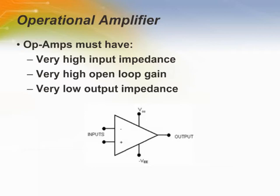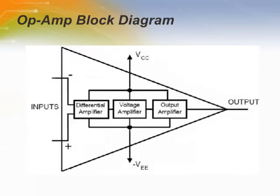Op-Amps must have very high input impedance, very high open-loop gain, and very low output impedance. It's next to impossible to achieve all three of these in one single stage. This is why Op-Amps generally have three different stages: the first stage is a differential amplifier, the second stage is the gain stage, and the third stage is the output stage.